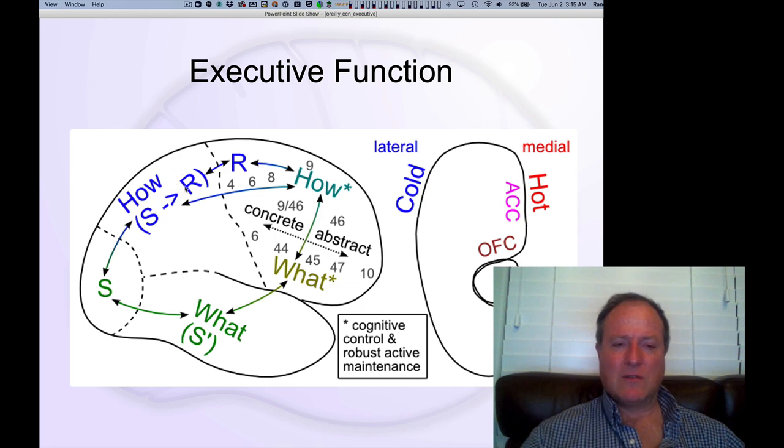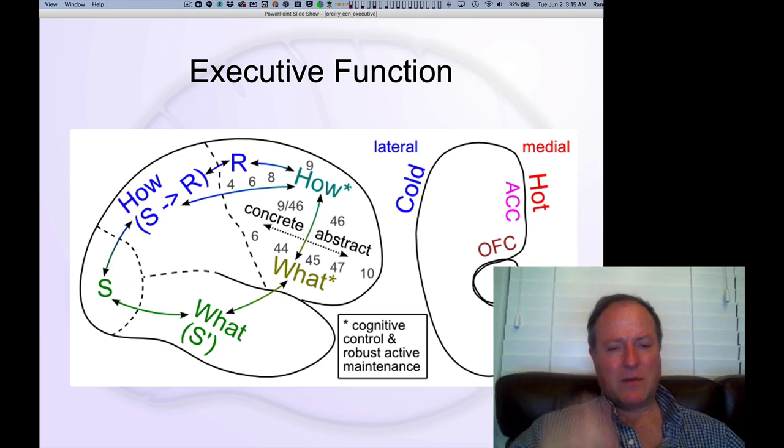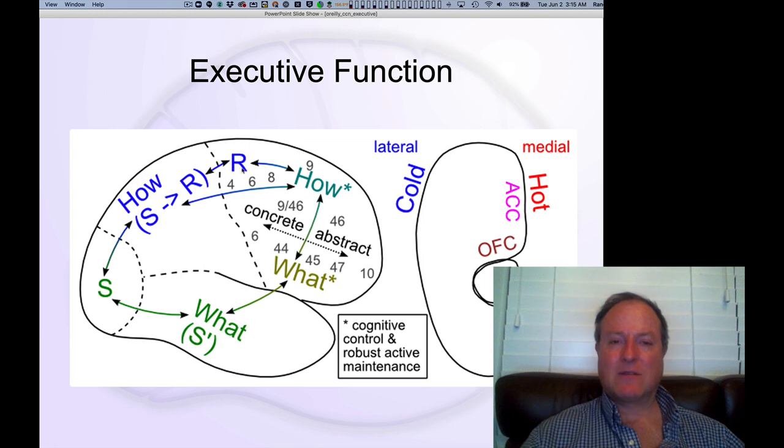And so we saw in parietal this notion that parietal cortex is mapping from sensory information into kind of action or responses. And so prefrontal cortex, dorsolateral prefrontal cortex, is providing this kind of top-down control for those kind of task representations.